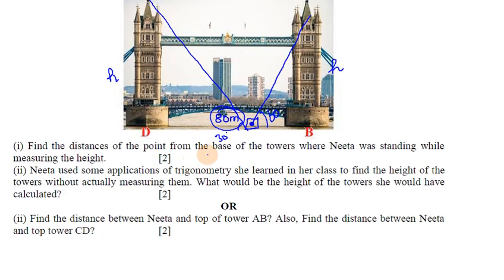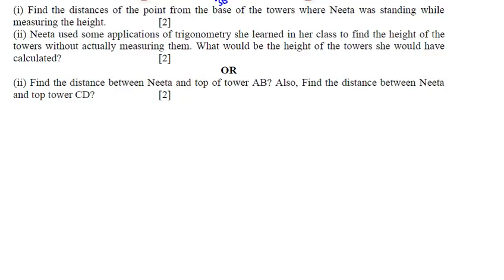Find the distance of the point from the base of the towers where Nita was standing while measuring the height. So in this diagram, this is the road, this is tower AB, and this is tower CD.